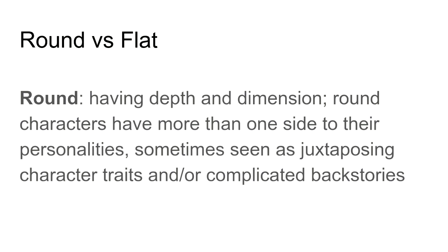So far we've covered characterization, protagonist, antagonist, foil, and archetype — terms you're welcome to use in Paper 2, and you'll be required to identify the protagonist. Now let's talk about more specific ways to define characters that you will definitely need to use in Paper 2. We can determine whether a character is round or flat. A round character has depth and dimension — more than one side to their personality, often with competing or juxtaposing character traits.